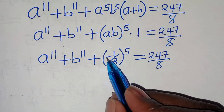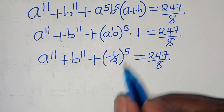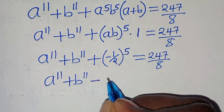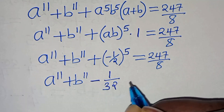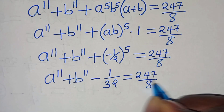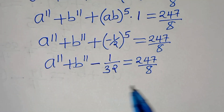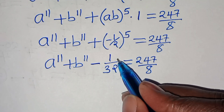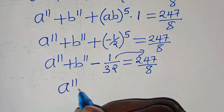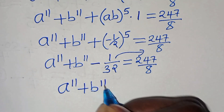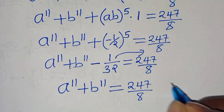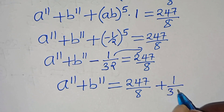Taking minus one over thirty-two to the right hand side, it becomes positive: a to the power of eleven plus b to the power of eleven equals two hundred forty-seven over eight plus one over thirty-two.